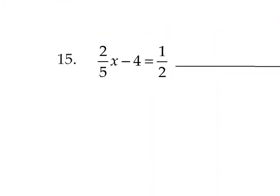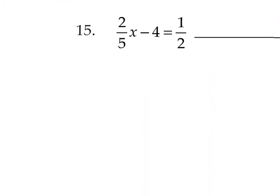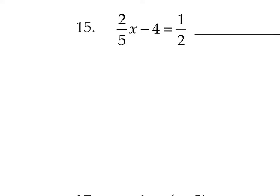Let's look at number 15. We have two fractions, so this is where we use clearing fractions. The first step is to identify the least common denominator of those fractions. We're not going to change denominators, but we'll use the LCD. The least common denominator of 5 and 2 is 10. So we're going to multiply the entire equation by 10, using distributive property.